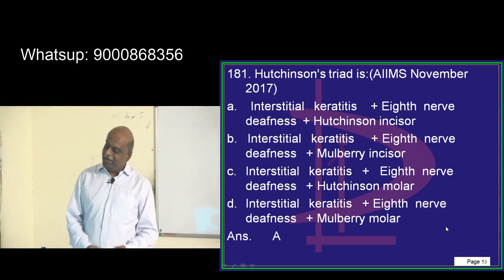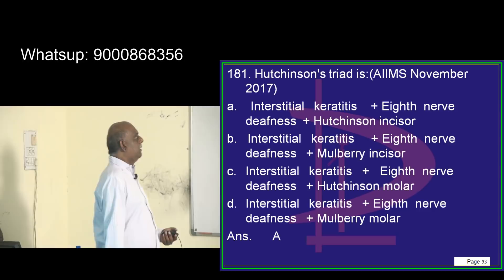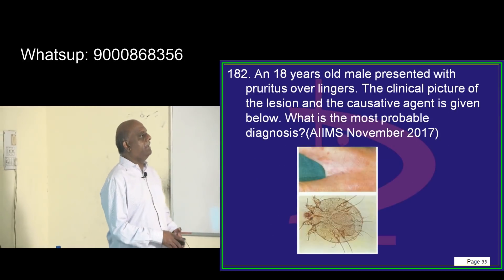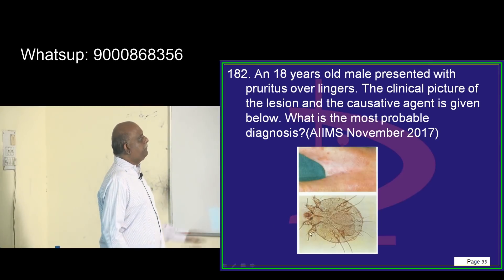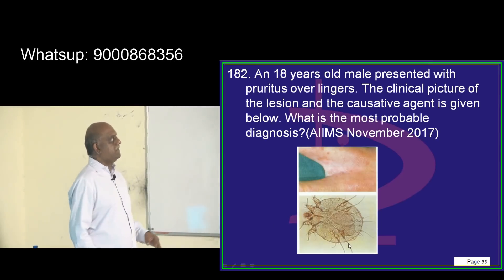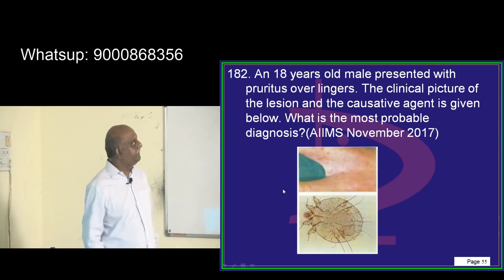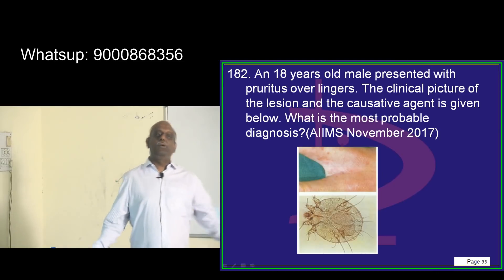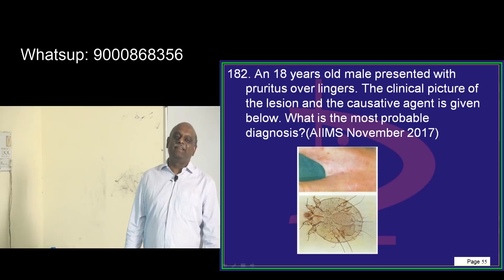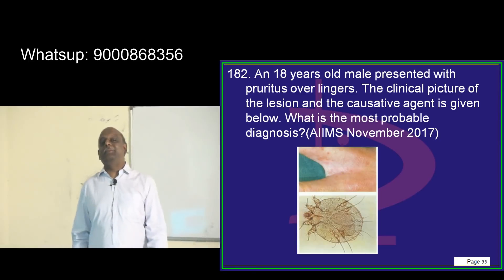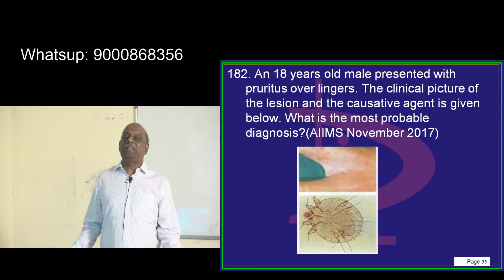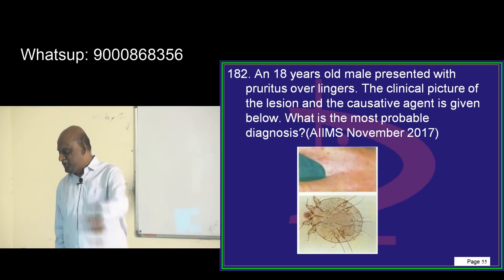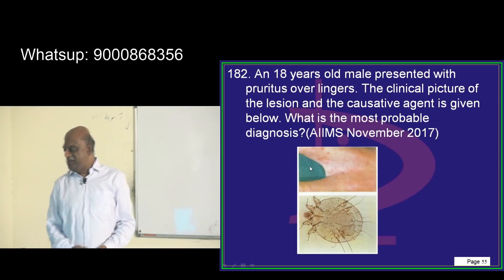An 18-year-old male presented with pruritus over the fingers. The causative agent — even with eyes closed you would say Sarcoptes. Burrows are the bullet you will not forget. Very easy question.